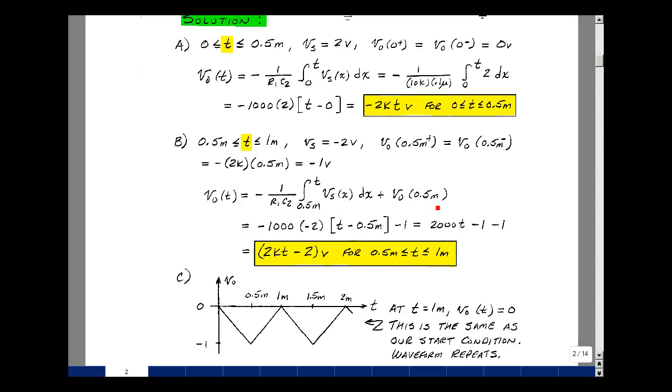Minus 1 over R1C2, integral now from 0.5 milliseconds to T of V of S dx, plus our initial condition at the output. This ratio is equal to minus 1,000. This was equal to minus 2. I want to bring out the minus 2. The integral of 1 dx, upper limit minus the lower limit, plus the initial condition of minus 1. Multiplying these two out, we get a minus and a minus canceling. We get plus 2,000 T. We get a plus 2,000 times 0.5 milli, milli and the 1,000 cancel. The half and the two become 1, minus 1, and I also have the initial condition of also minus 1. We get 2,000 times T minus 2 between half a millisecond and 1 millisecond.